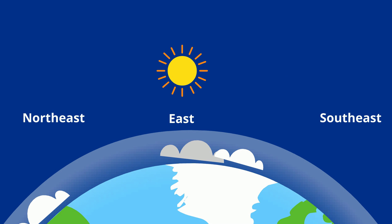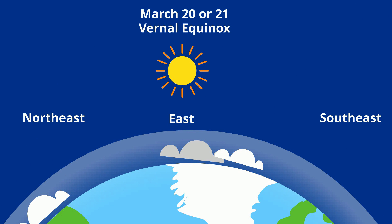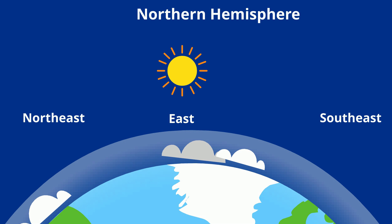In the northern hemisphere, on March 20th or 21st depending on the year, you have the first day of spring, and the sun is directly above the equator. This is called the vernal equinox. Vernal means fresh, like spring. The sun will rise due east.